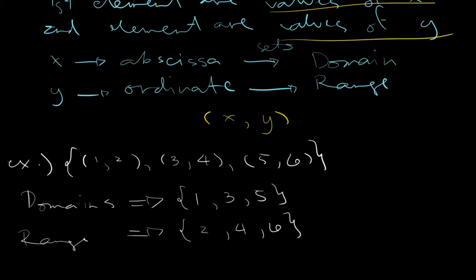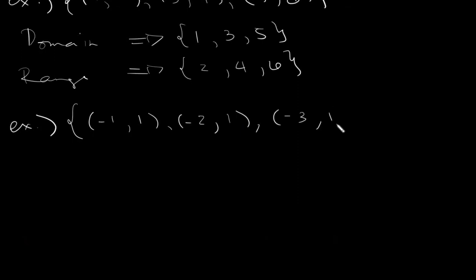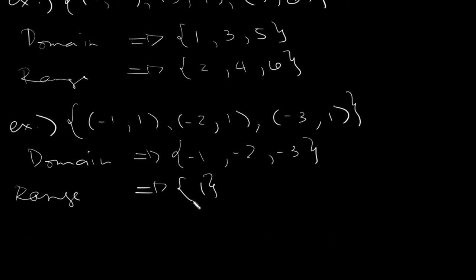Next example: {(-1,1), (-2,1), (-3,1)}. Our domain — all the values of x — would be -1, -2, and -3. And our range: even though the value 1 is repeating three times, we will just simply write 1, because 1 as an element is the same as all the other 1s.